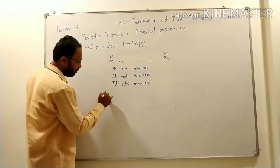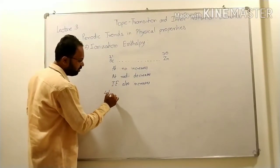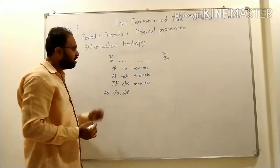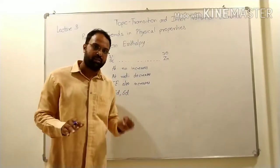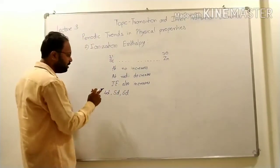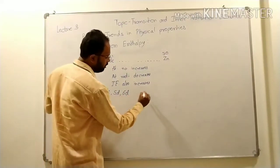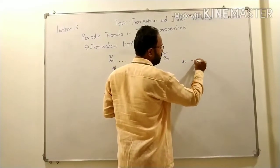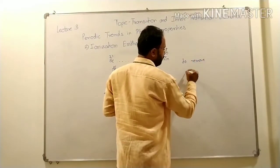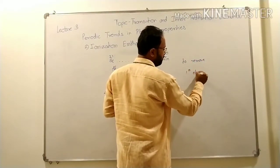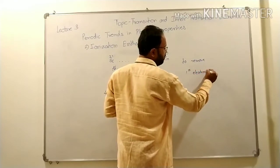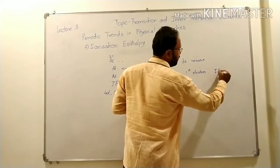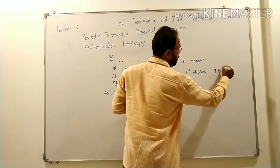Similarly, in the 4D series, 5D series, and 6D series, the trend is similar. Now, the energy required to remove the first electron is called the first ionization enthalpy.